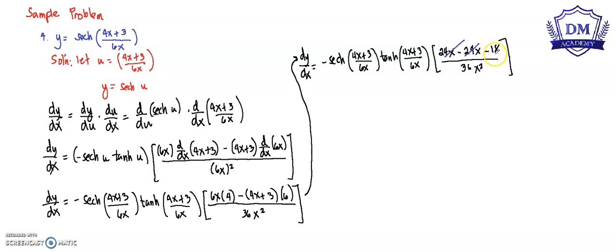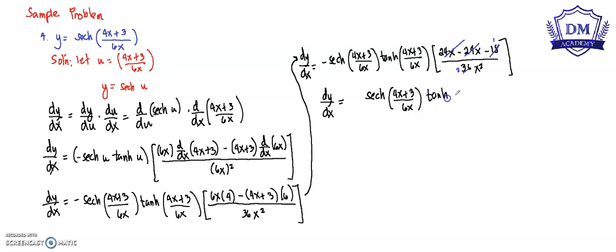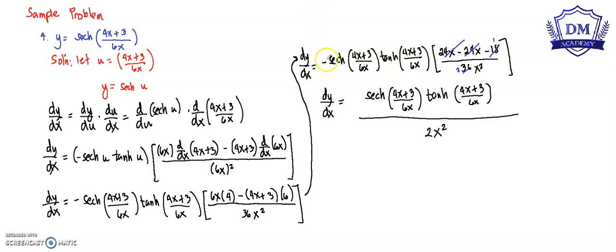Then negative 18 and 36 are divisible: 18 becomes 1 and 36 becomes 2. Negative times negative gives positive. Therefore, the derivative of y with respect to x is equal to the hyperbolic secant of (4x + 3)/6x multiplied by the hyperbolic tangent of (4x + 3)/6x, all over 2x squared. This is the derivative of y with respect to x.